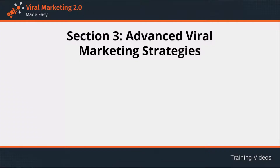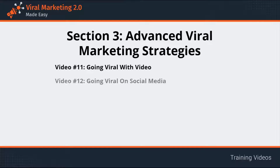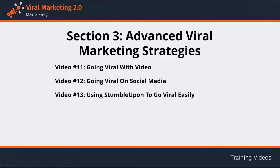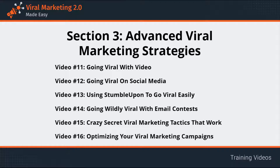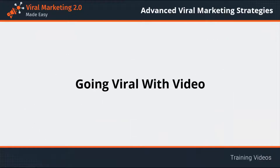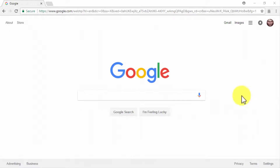Welcome to Section 3: Advanced Viral Marketing Strategies. Here we are going to show you how to expertly deliver your viral marketing campaigns across the most relevant channels like a pro. The contents include: going viral with video, going viral on social media, using StumbleUpon to go viral easily, going wildly viral with email contests, crazy secret viral marketing tactics at work, and optimizing your viral marketing campaigns. Let's fire this up with Section 3's first video: going viral with video.